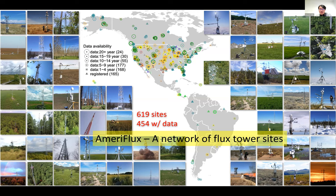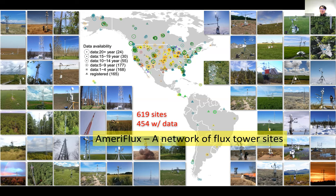I really like to share how diverse and beautiful the sites are — different ecosystems, different tower structures, operated by different teams. Today we know there are more than 600 sites across the Americas, and I think there are more coming up soon. About 450 of them have some sort of data available right now. It's a huge collection of tower sites for people doing flux research across the Americas.